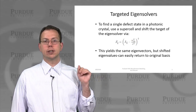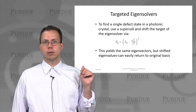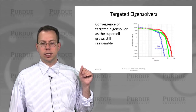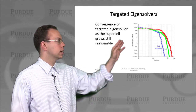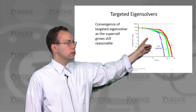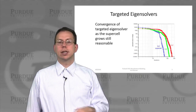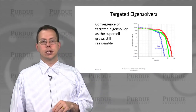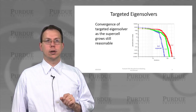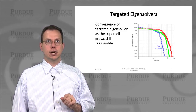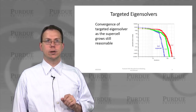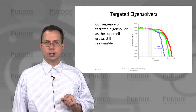We can of course easily return this to the original basis when we're done, so it's not a big problem. And if we look at the convergence of these calculations, we can actually see that these converge very well for either small or even large supercells. Of course it takes a little longer as the cell gets bigger because we have more states to deal with, so it's not necessarily a completely free lunch, but it definitely saves us a lot of time compared to a straightforward brute force approach.